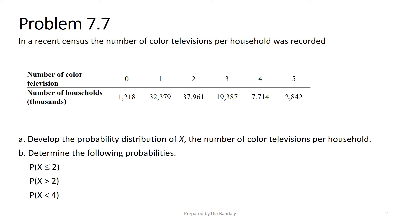You may be surprised that some people answered zero - 1,218 people. And we have 32,000 who answered one set, two sets, and so on. The first question is part A: develop the probability distribution of X, the number of color televisions per household.